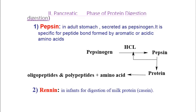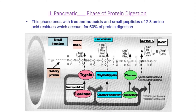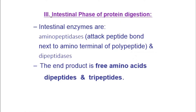The second phase is the pancreatic phase of protein digestion. After the gastric phase, the pancreatic phase begins, during which enzymes such as trypsin, chymotrypsin, and elastase act on protein and convert it into free amino acids and small peptides. The third phase is the intestinal phase, where exopeptidases come into action. They attack either the carboxyl end or the amino end of the protein, ultimately producing amino acids, dipeptides, and tripeptides.